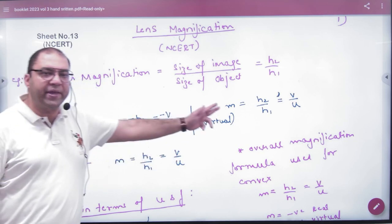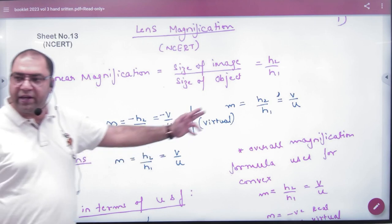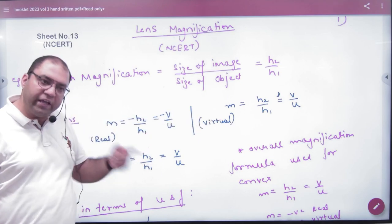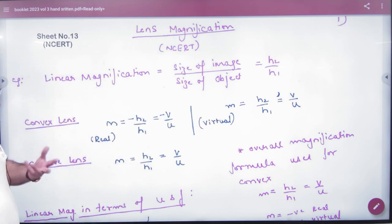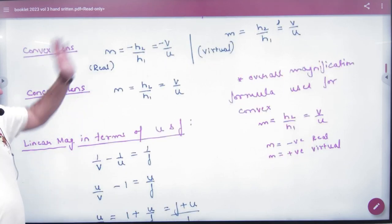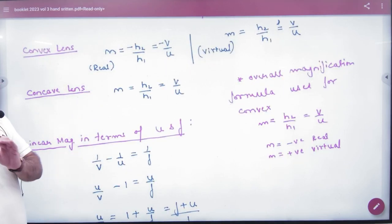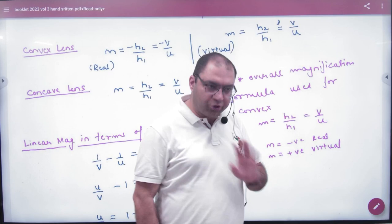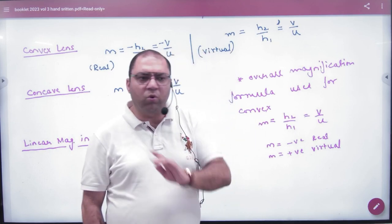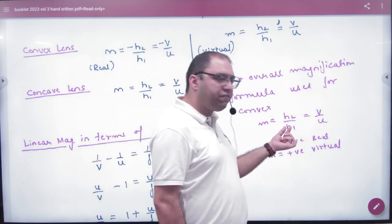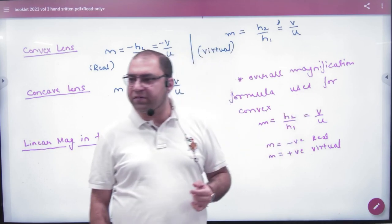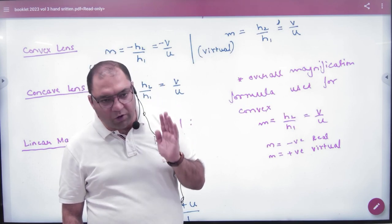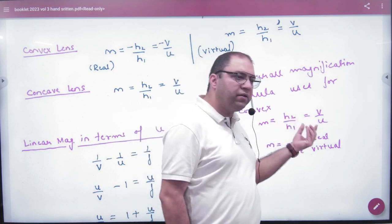Here and here, if you compare, you will not differentiate which virtual case is convex virtual or concave virtual. The formula is the same. What do we do? We will use a very simple technique. We will use magnification formula: H2 by H1 and V by U. We will not put any sign convention. Just height of image by height of object, distance of image by distance of object. In numericals we will know all cases.